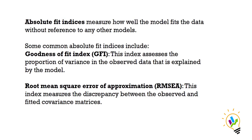With absolute fit indices, we are not going to take any other model as a reference. To understand absolute fit indices, we primarily use two types of indices: one is the Goodness of Fit Index (GFI), which assesses the proportion of variance in the observed data explained by the model, and the second is Root Mean Square Error of Approximation (RMSEA), which measures the discrepancy between the observed and fitted covariance matrices.